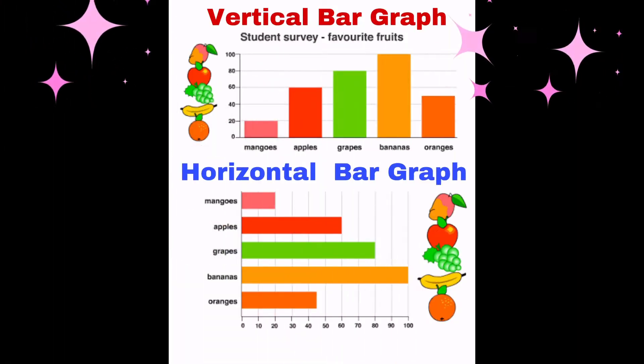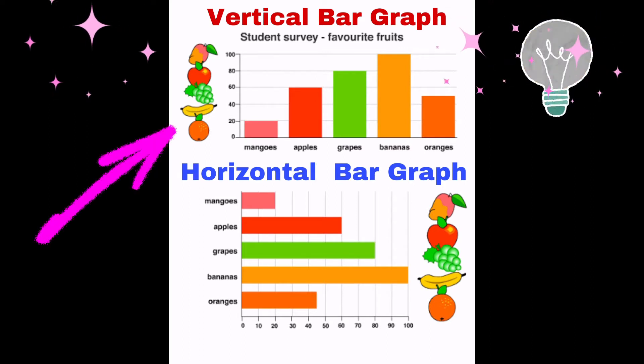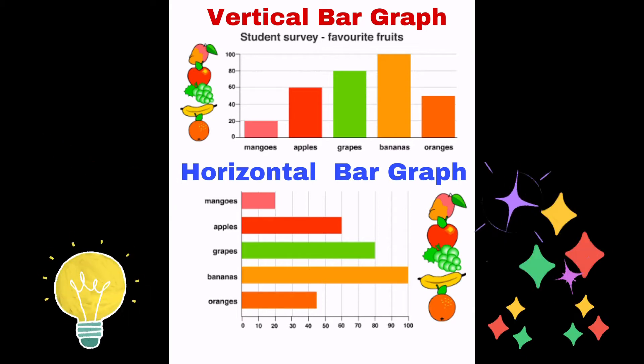Let's take a look at this picture. On the top part, we have the vertical bar graph. While at the bottom part, we have the horizontal bar graph.